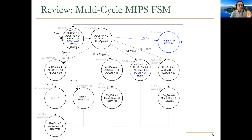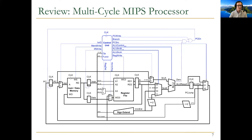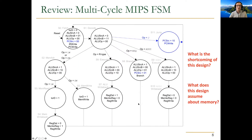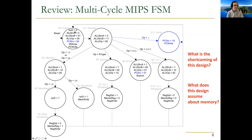The shortcoming of multi-cycle design: only a small fraction of the processor's resources are being used at any given time. For example, when you're fetching a load word instruction, you're using the fetch part, but nothing is happening on the other parts of the processor. This design also assumes memory is one cycle in the finite state machine, though we discussed how multi-cycle microarchitecture can easily accommodate multi-cycle memory by staying in the memory access state for the required number of cycles, using a ready bit as the transition trigger.